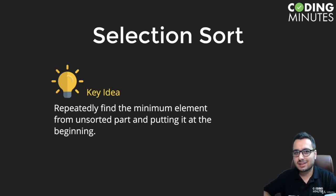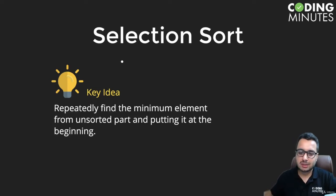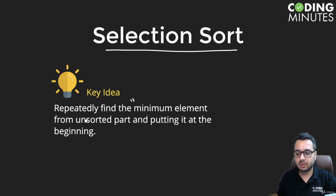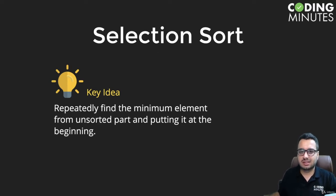In this lecture we will talk about the selection sort algorithm. It's a very simple algorithm based upon a basic idea: every time we find the minimum element from the unsorted part of the array and put it at the beginning.